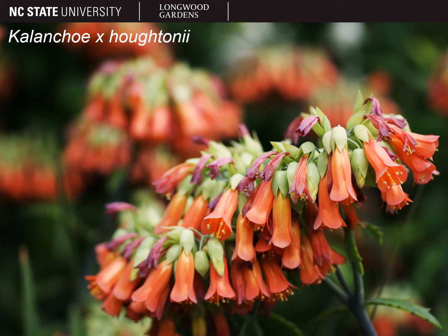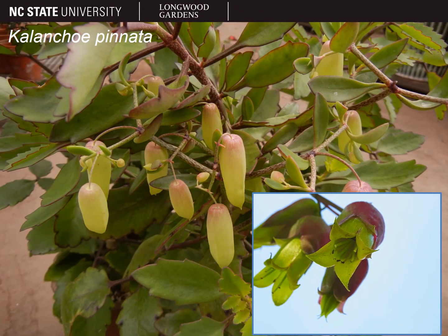The flowers of bryophyllum-type kalanchoes will have inflorescences composed of tubular flowers. They still consist of four petals, but they will be united in a long corolla tube. The corolla tube of Kalanchoe pinnata is enclosed by a long tubular calyx, giving it a pretty bell-like appearance.